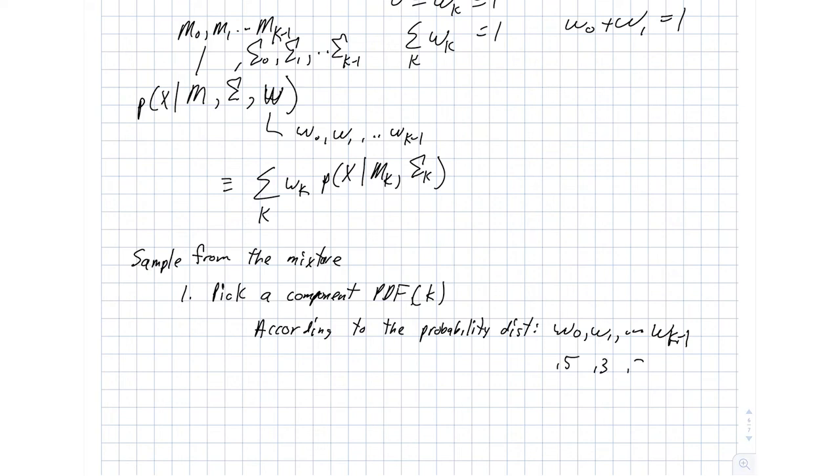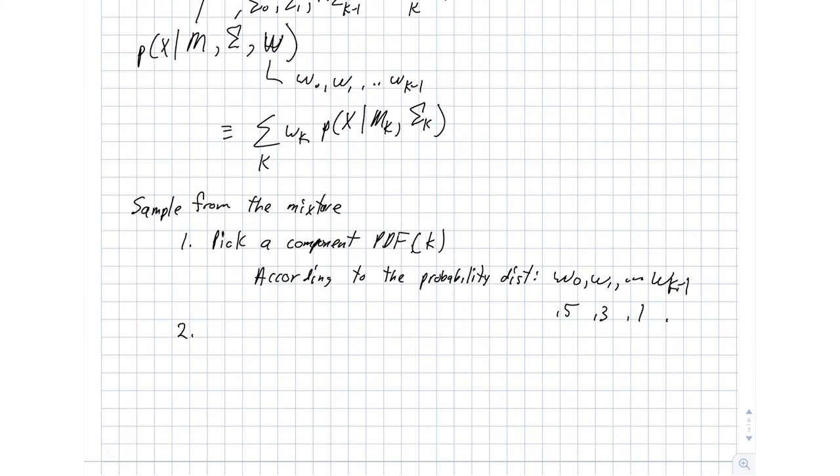If W0 is, say, 0.5, W1 is 0.3, W2 is 0.1, and W4 is 0.1, then what this means is that half the time we're going to select Gaussian 0, 30% of the time we're going to select Gaussian 1, and 10% of the time we'll select Gaussians 2 and 3. So once we've picked our PDF, we can then just sample from that constituent probability density function. That PDF function looks like this: likelihood of x given the mean of PDF k and our covariance matrix k.